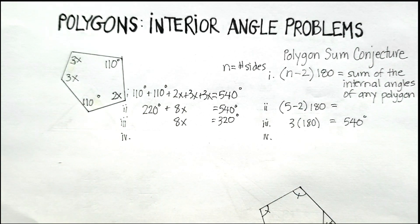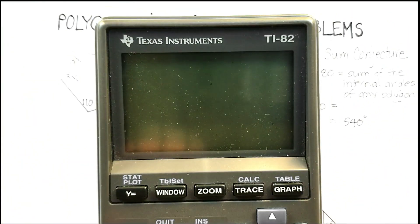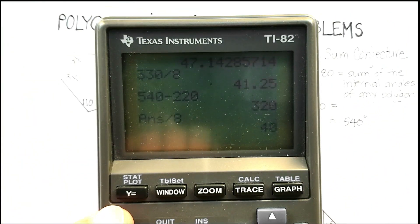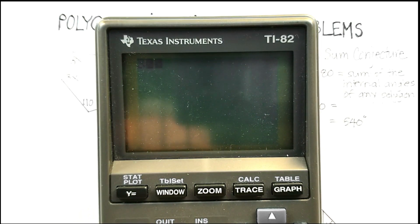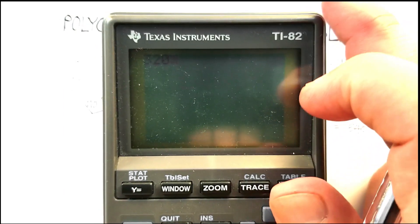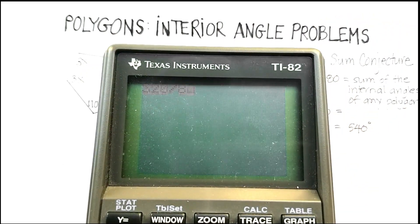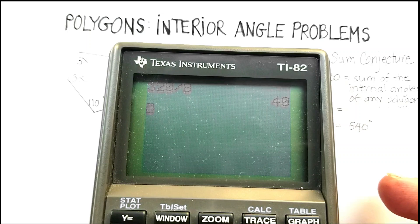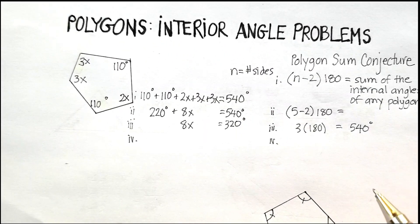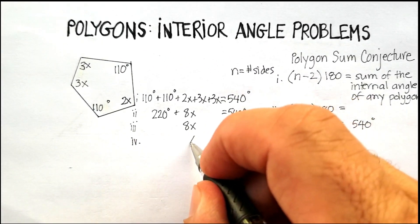And then I'm going to divide 320 by 8. Let me make sure I get this correctly. 320 divided by 8 should give me 40, and sure enough it is. So I get x is equal to 40.